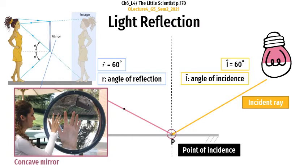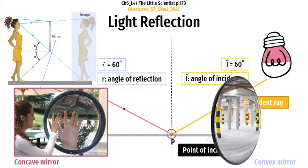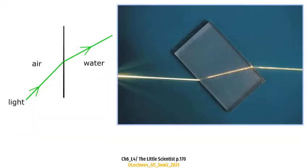What about concave mirrors? As you can see, the image of the hand is bigger than the hand itself. That's what concave mirrors do — they give us images larger than the objects. Convex mirrors do the opposite: they give you a wide image but make things smaller in size.